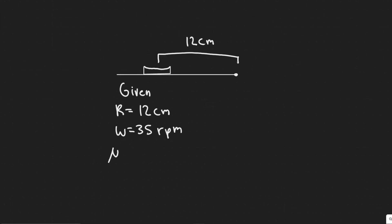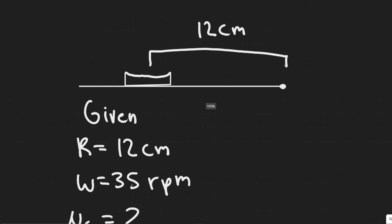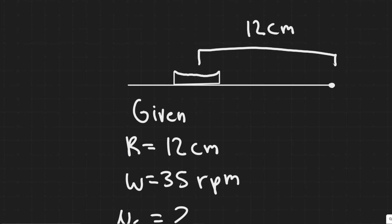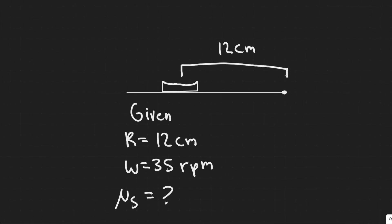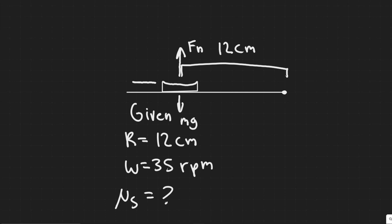What we're trying to find is the coefficient of static friction, μs. So we want to first draw the free body diagram. The coin is going to have gravity mg acting on it, and also a normal force which points up, perpendicular to the surface. Intuitively, the coin is going to slide off outward, and since friction always impedes motion, the force of friction will point inward.